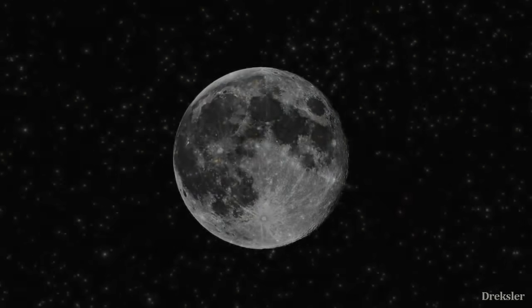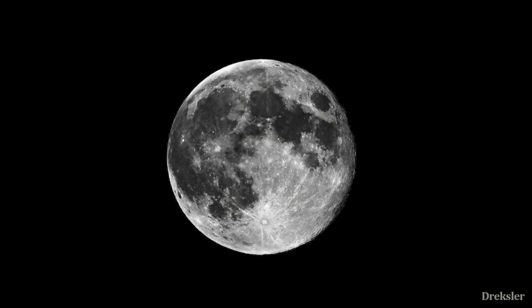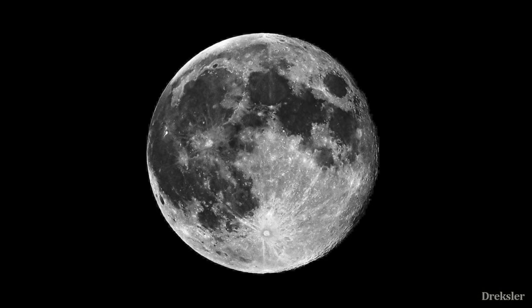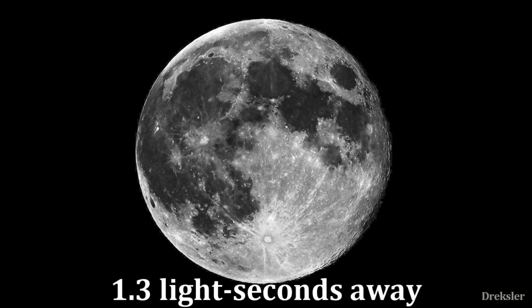So let's start with familiar objects, such as our own moon. It is 380,000 kilometers away on average, meaning from earth we see it 1.3 seconds in the past.